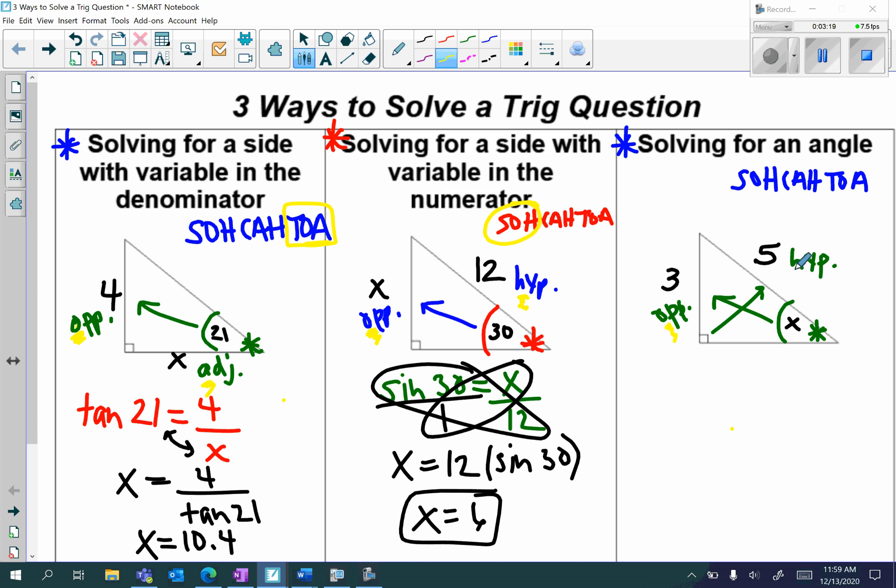So I have an O and an H. Which one represents O and H? That's going to be sine. So I have sine of x is equal to my opposite, which is 3, all over my hypotenuse, which is 5.